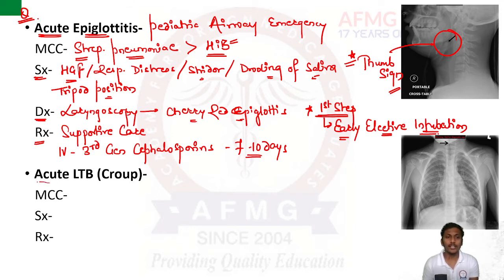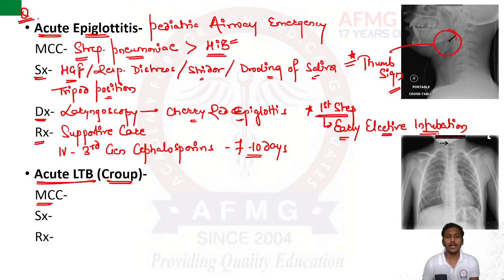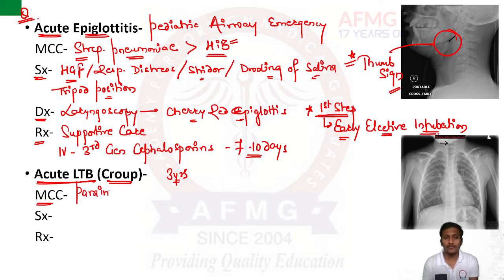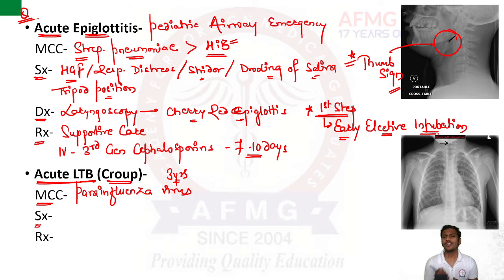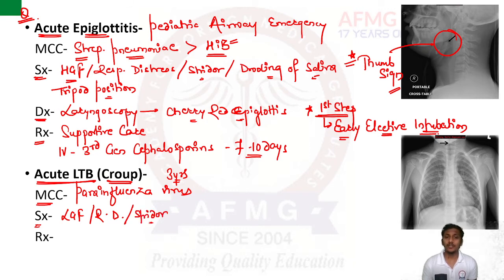Next condition: acute LTB — laryngotracheobronchitis — where there is inflammation of the larynx, trachea, and primary bronchus, also known as croup. It is common in children up to three years of age. The most common cause is parainfluenza virus. Acute LTB has a less severe course compared to acute epiglottitis. It generally starts with a viral prodromal period, low-grade fever, possible respiratory distress, stridor, and a very characteristic feature called barking cough.